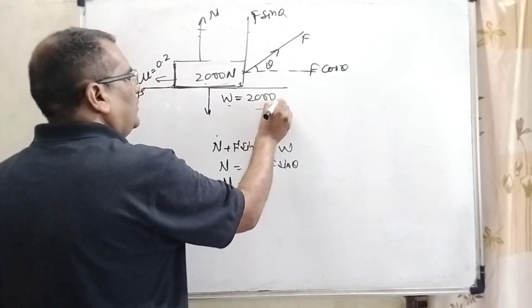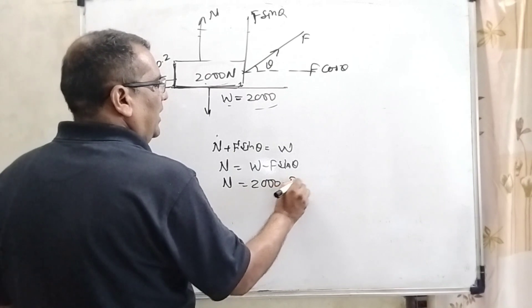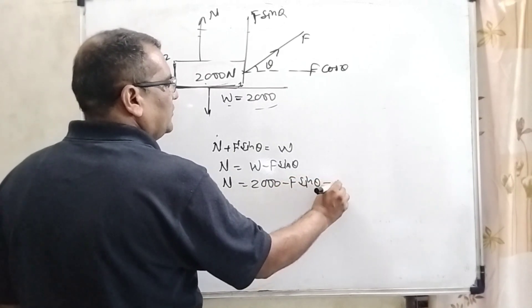So normal force N equals W minus F sin theta. And W, what is W? 2000 minus F sin theta. That is the first equation.